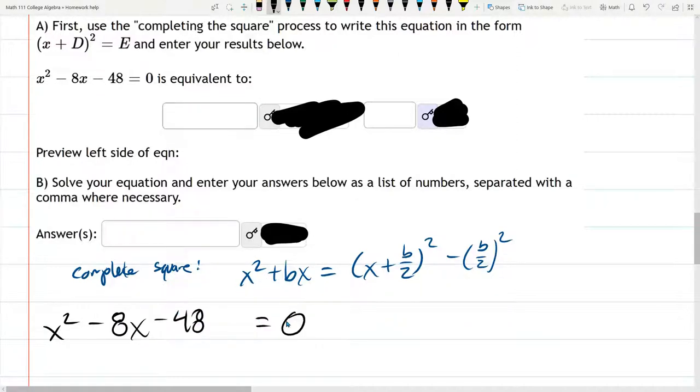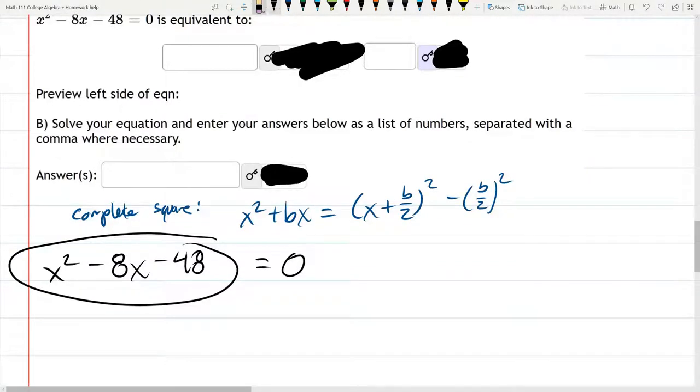And this does equal 0. Algebraically, if we solve this, we'd be finding the x-intercepts of this right here, because that's when the y-value equals 0.